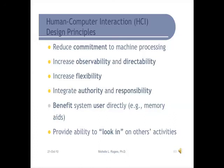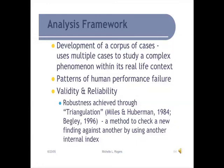Ways to address these issues: reduce commitment to machine processing so people are responsible to their work rather than the machine; increase observability and directability so you can see what others are doing and tell the status; integrate authority and responsibility so if you're responsible for something you have the authority to change it; benefit the user directly by increasing use of memory aids; and allow users to look in on other activities.